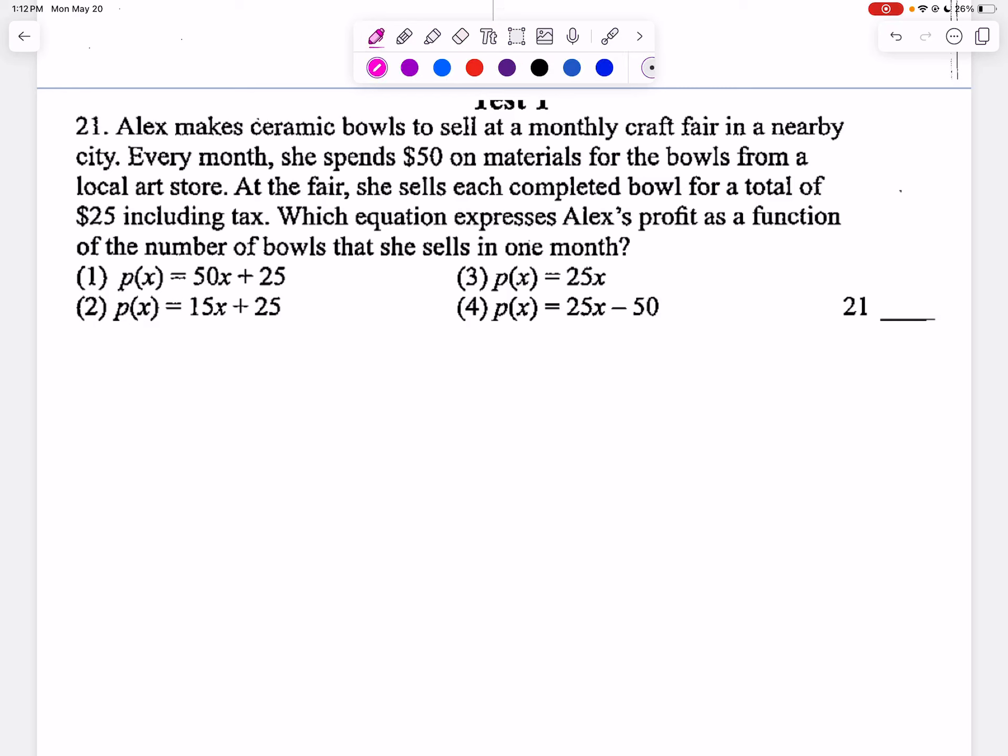Question 21. Alex makes ceramic bowls to sell at a monthly craft fair in a nearby city. Every month she spends $50 on materials for the bowls from a local art store. At the fair, she sells each completed bowl for a total of $25 including tax. Which equation expresses Alex's profit as a function of the number of bowls that she sells in one month?